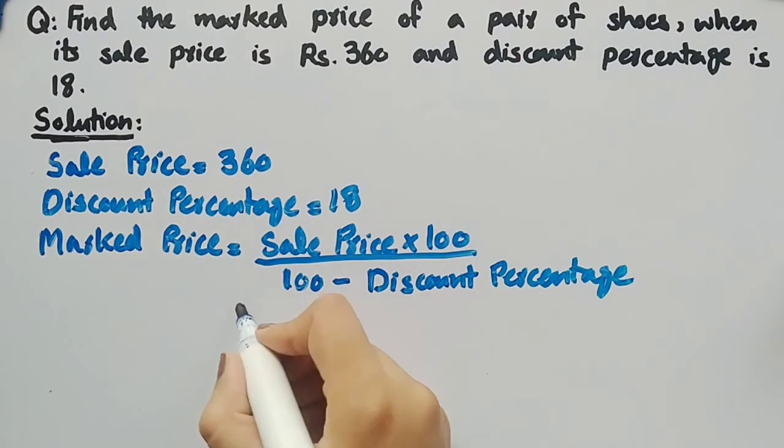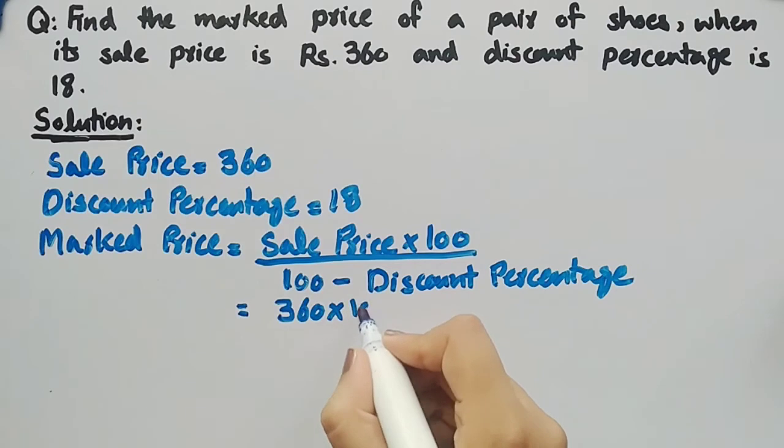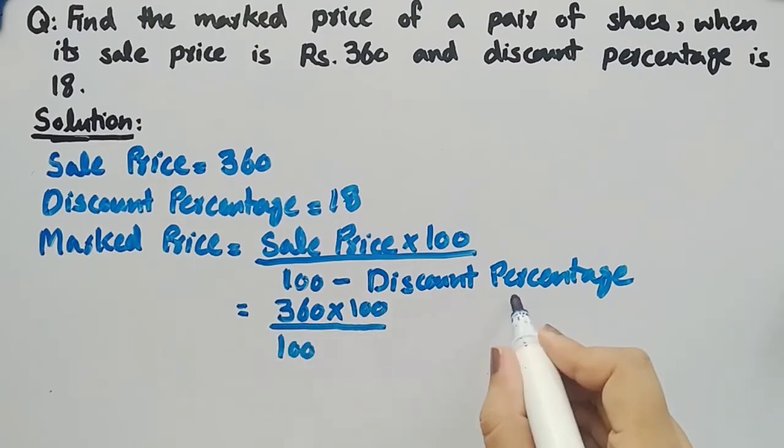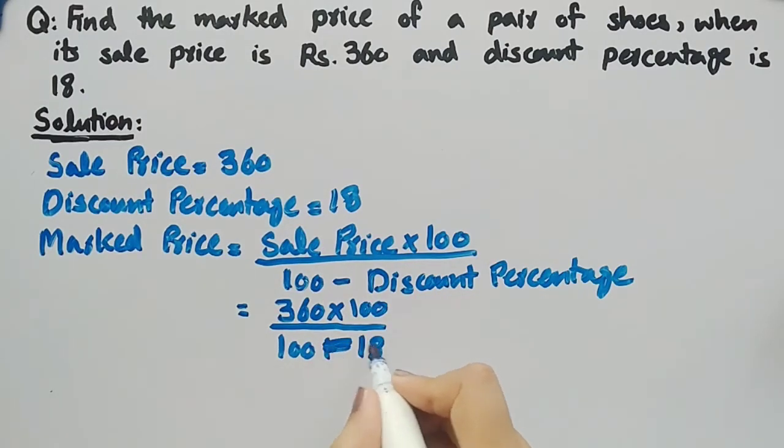The values: sale price is 360 multiplied by 100, divided by 100 minus discount percentage, that is 18.